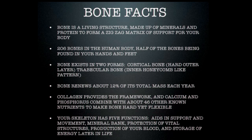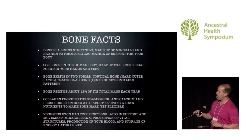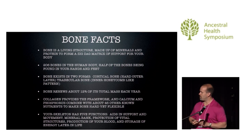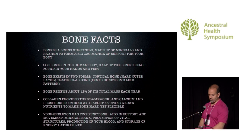Bone is a very metabolic, very active tissue. We have 206 bones in the human body, and over half are just in your hands and feet. The outer surface is cortical bone, and the inner matrix — like the zigzags on a bridge — is your trabecular bone. Collagen provides the framework, and calcium and phosphorus combine with about 4,600 other known nutrients to make it hard, yet bone can actually be flexible. Five functions of bone: support and movement, protection of vital structures like heart, lungs and brain, mineral banking, blood production in the bone marrow, and energy storage — red marrow can turn to yellow marrow and become an important fat and energy source as you age.